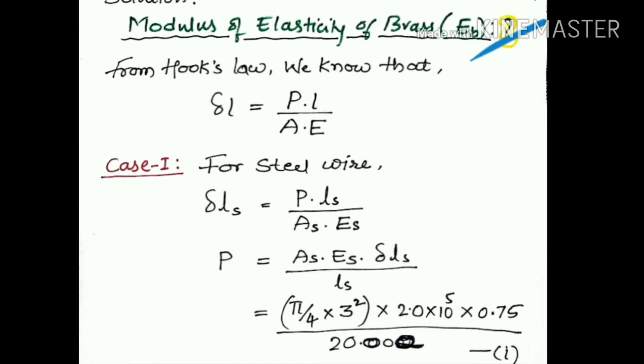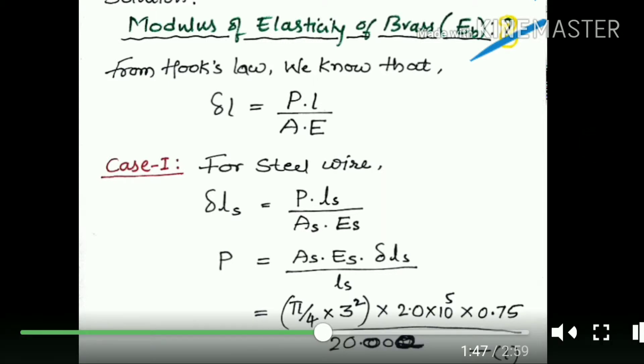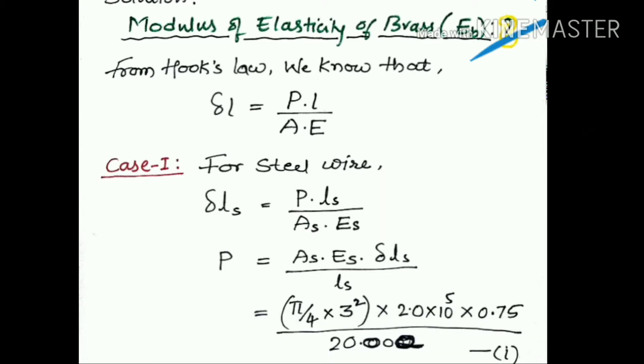As we know from Hooke's law, δL = PL/(AE). The deformation or change in length equals the load P times length L divided by area A times Young's modulus E. By using this formula we have to calculate the Young's modulus for the brass material.